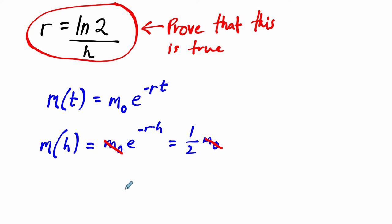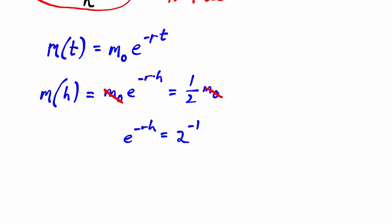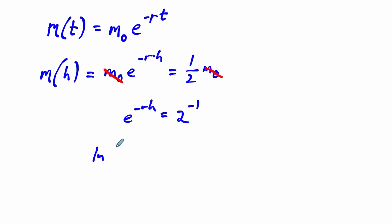And what's left? E to the negative rh equals a half. A half is just 2 to the negative 1, same thing. And if I take the natural log of both sides, e to the negative rh and the natural log of 2 to the negative 1, I can apply a law of exponents to multiply these exponents down.